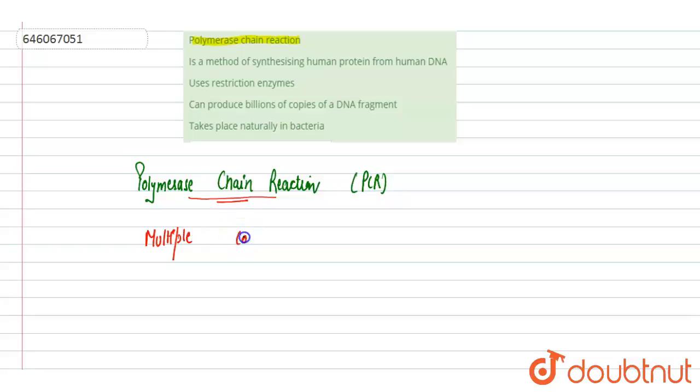This technique is used for making multiple copies of DNA. It is one of the in vitro techniques, we can say under lab condition, under controlled lab condition that is being performed.